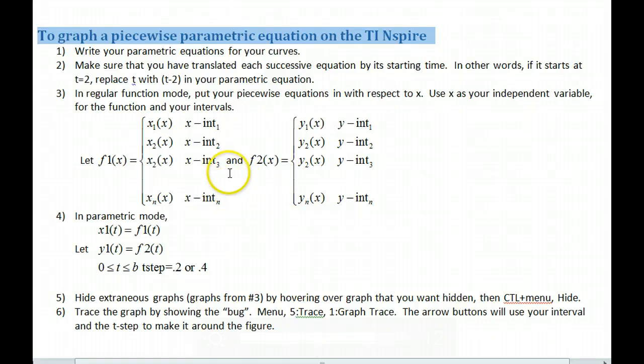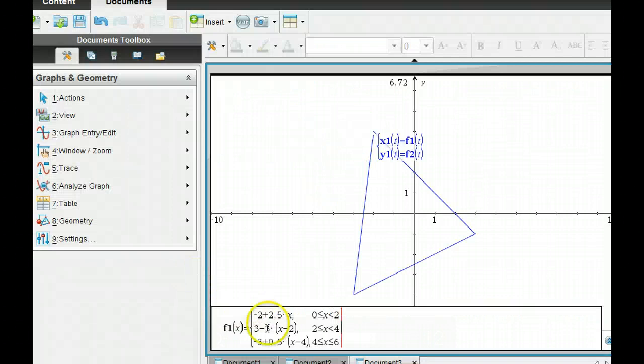Then you switch over to parametric mode, and that's in the graph entry, and you do X1 of T is equal to F1 of T, and Y1 is equal to F2. And then you make your full interval here, and your T step, just to make sure it's fast enough, you do one of those. Point 2 or point 3.